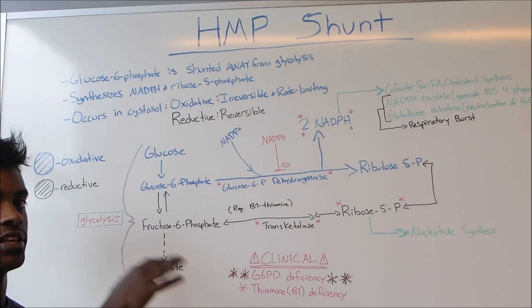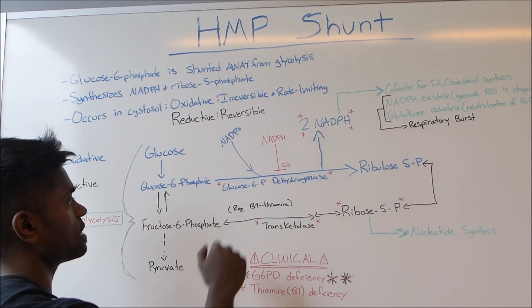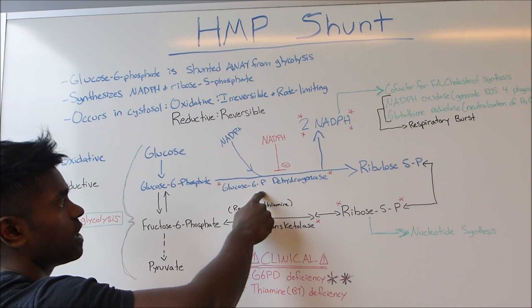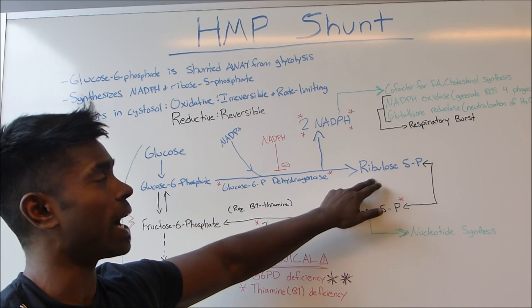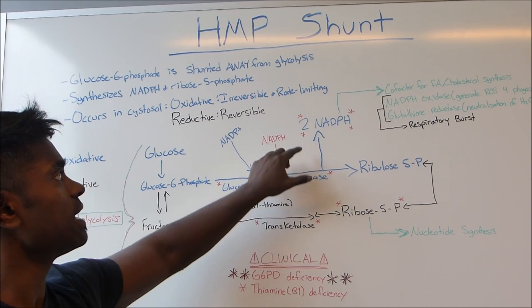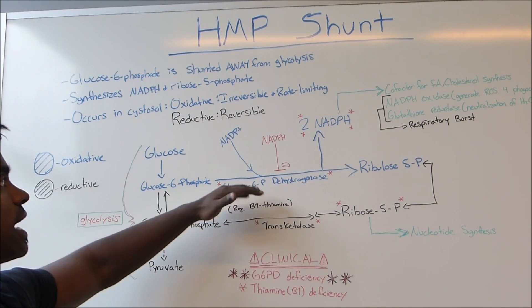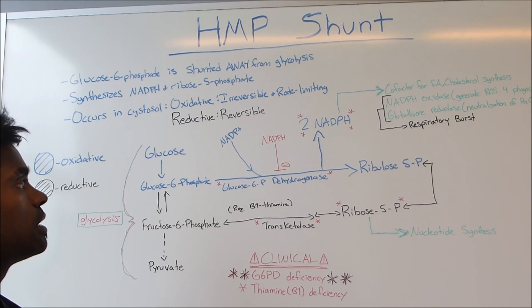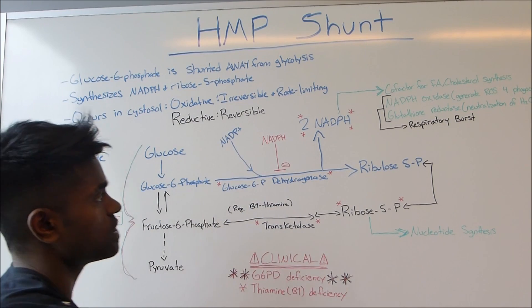We're going to begin with glucose-6-phosphate. This is a very simplified pathway — I just want to highlight the key enzymes. The main enzyme involved is glucose-6-phosphate dehydrogenase, which is very important, and that's going to convert glucose-6-phosphate into ribose-5-phosphate. Throughout this process, NADPH is going to be produced, so it makes sense that an abundance of NADPH is going to inhibit it.